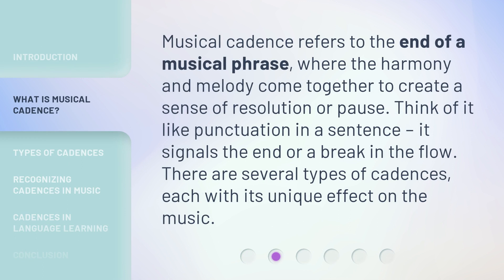Musical cadence refers to the end of a musical phrase, where the harmony and melody come together to create a sense of resolution or pause. Think of it like punctuation in a sentence — it signals the end or a break in the flow. There are several types of cadences, each with its unique effect on the music.